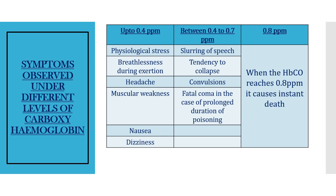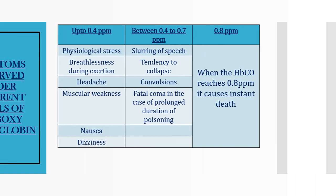When concentration goes from 0.4 to 0.7 ppm: slurring of speech, difficulty in speaking, tendency to collapse, convulsions, and fatal coma in case of prolonged duration of poisoning — if the exposure duration is more, a person may fall into a coma. And when the level reaches above 0.8 ppm, it results in instant death.